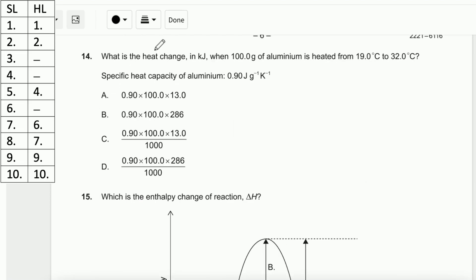Number 14. What is the heat change in kilojoules when 100 grams of aluminum is heated from 19°C to 32°C? Specific heat capacity of aluminum is 0.90 joule per gram Kelvin. To calculate the heat change, use the formula Q = mcΔT. You can just plot ΔT as 32 minus 19. It's not necessary to convert to Kelvin. The mass of aluminum is 100 grams divided by 1000 to convert to kilograms. For C, it's 0.90. Therefore, the answer is C.